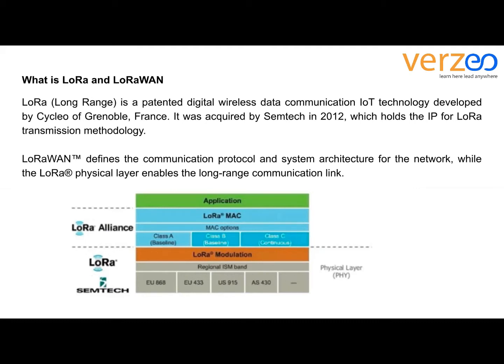LP-WAN is suitable for typical IoT devices because IoT devices need to send data continuously over long distances. LoRa and LoRaWAN are another type of LP-WAN. LoRa and LoRaWAN belong to the category of non-cellular LP-WAN, as opposed to cellular LP-WAN.